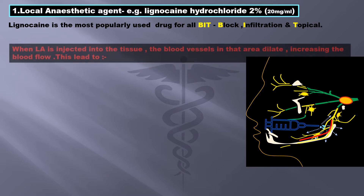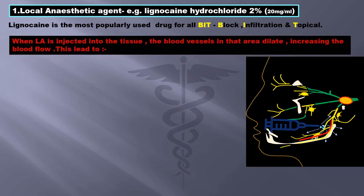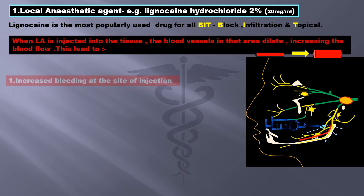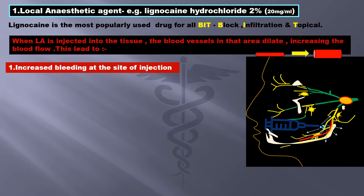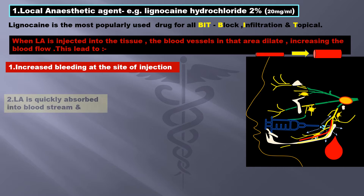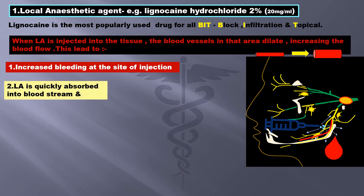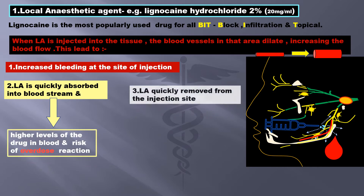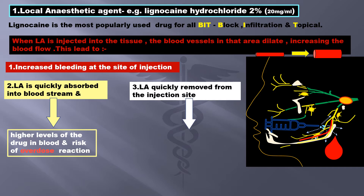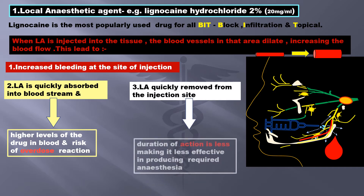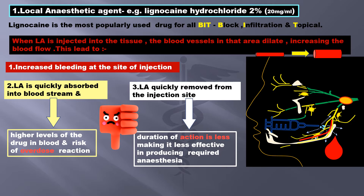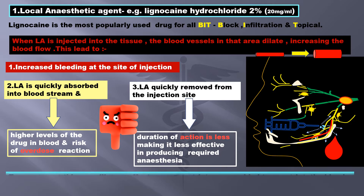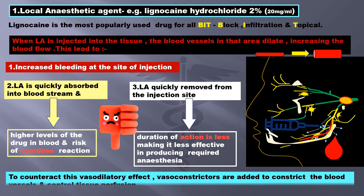When LA is injected into the tissue, the blood vessels in that area dilate, increasing the blood flow. This leads to: 1. Increased bleeding at the site of injection. 2. LA is quickly absorbed into the bloodstream, leading to higher levels of the drug and risk of overdose reaction. 3. LA is quickly removed from the injection site, so the duration of action is less, making it less effective in producing the required anesthesia.